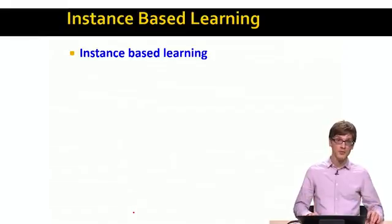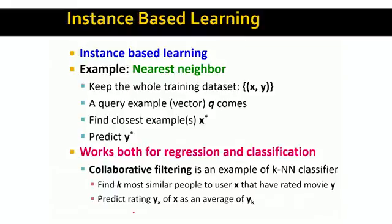So an example of instance-based learning, the idea here is that we want to use existing instances or existing data points to make predictions about unknown or unlabeled data points. So the example of such a method is called nearest neighbor, where the idea is that we take all our training data, all our x, y pairs, let's say in memory or on the disk. And then whenever a new query example, let's call it Q, comes, we find other examples x prime that are similar to it. And then based on the value, the labels of those examples, we also predict the value y star for the given query point Q.